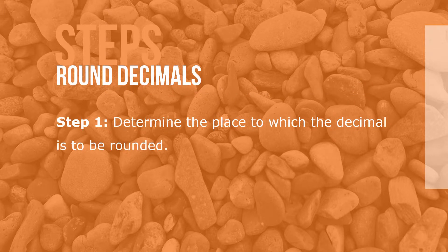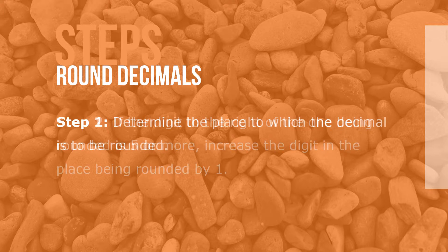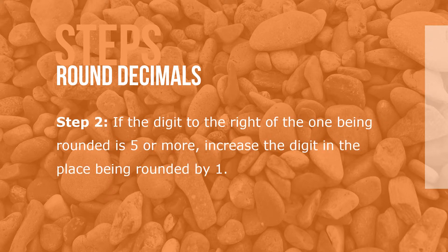Here are the steps to round decimals. Step 1: determine the place in which the decimal is to be rounded. Step 2: if the digit to the right of the one being rounded is 5 or more, increase the digit in the place being rounded by 1.